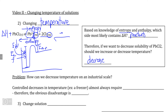Therefore, if we decrease the temperature, we are effectively making the endothermic reaction almost impossible to happen, meaning that our reverse reaction — the exothermic reaction, which also happens to be the precipitation reaction — is favored. This is one way that we can decrease the amount of lead ions within solution by decreasing the temperature and shifting the equilibrium to favor the precipitation reaction.